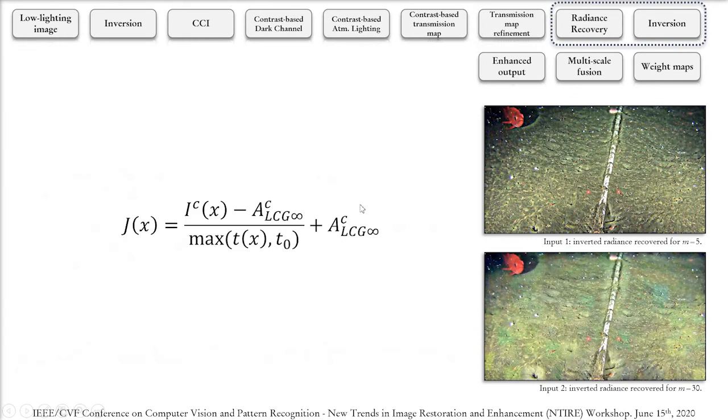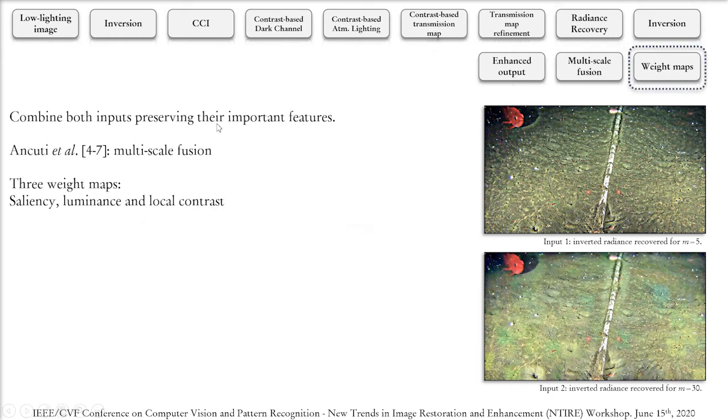With the use of the atmospheric lighting models and the transmission map we are now ready to recover the hazeless version of the images. As you can see for the one that was generated using M equals 5, there's a better highlighting of the finer details of the image while the one created with M equals 30 did a better job in removing the darkness on the image. Now we want to find a way to efficiently combine those two images so that we can harvest the advantages of both of them.